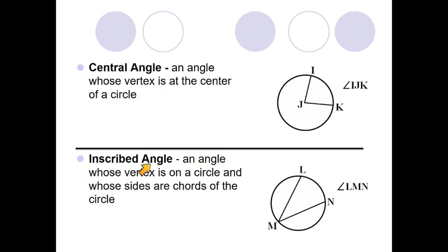But we also have inscribed angles. An inscribed angle is an angle that doesn't have its vertex at the center of the circle, but has its vertex on the edge of the circle, and it's also made up of two chords. The chords in this case would be chord LM and chord MN. Those two chords that meet at point N on the circle make up inscribed angle LMN.